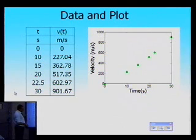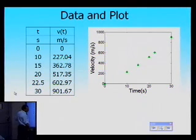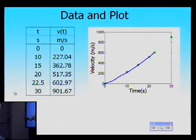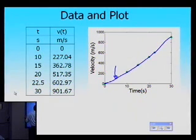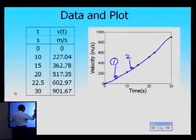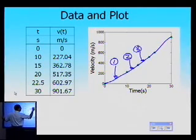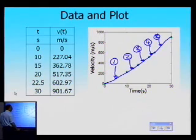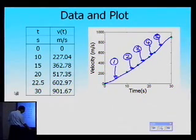Here is the data for velocity as a function of time, and I'm showing you the plot. What you are going to do is draw a quadratic spline from 0 to 10, then another from 10 to 15, then another from 15 to 20, then the next one from 20 to 22.5, and the next one from 22.5 to 30. So you will have five quadratic splines going through these six consecutive data points.